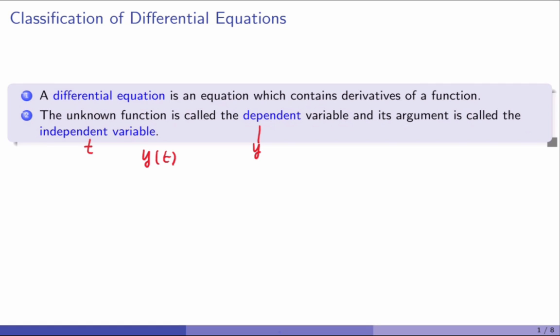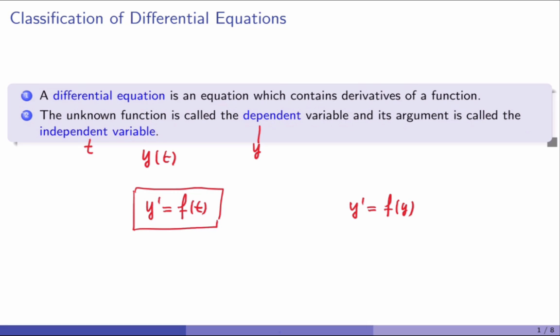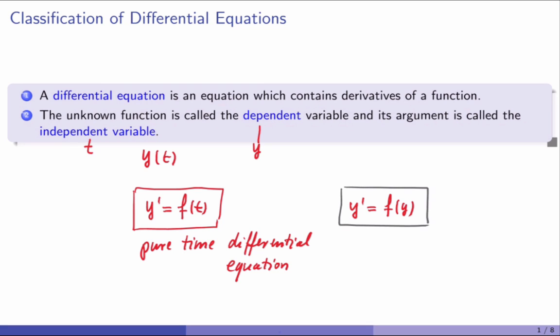I would like to show you the two types of equations we study. On the one hand, we have y' equals a function which depends on t, meaning it depends only on the independent variable. And on the other hand, we have an equation which depends on the dependent variable, so y' equals f(y). These are two types of differential equations. In this video, I only focus on the first type, which we call a pure time differential equation. The other case, y' equals f(y), is called an autonomous differential equation.